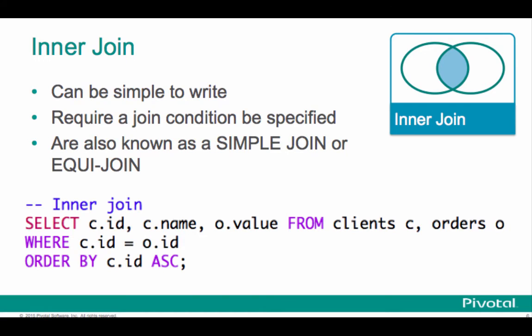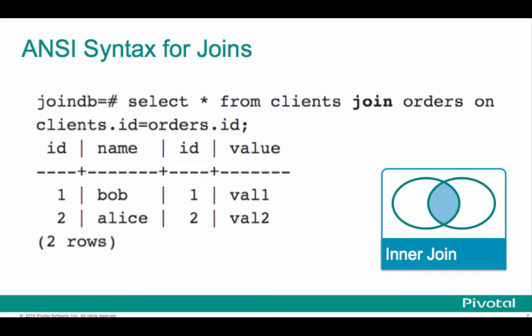In this inner join example, we have an equi-join because the join condition is an equals in that where clause there. So inner joins are simple to write, you require a join condition. Typically called inner joins, also simple joins or even equi-joins. In this case, this inner join, we want the ID, the name, and the value, and they're going to come from two different tables, clients and orders. These are the same tables, same types of queries we saw in the demo. There's also an ANSI syntax for joins: select star from clients join orders on clients.id equals orders.id. There's just an alternative way to specify that inner join, basically the same result.